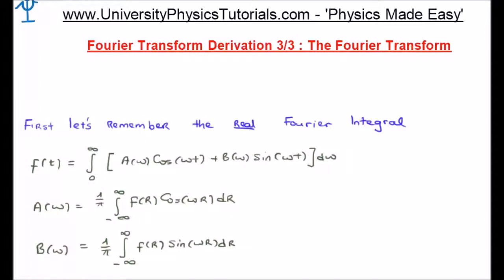In video number one of three I introduced the concept of the Fourier series and I worked through deriving the coefficients a sub zero, a sub n, and b sub n. I tried to convince you that the Fourier series introduced the concept of frequency space and using cosines and sines as basis functions, rather than basis vectors, before the Fourier transform did.